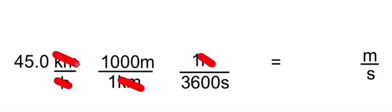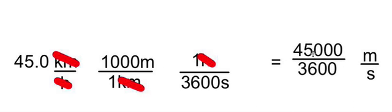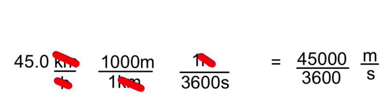across the top, I've got 45 times 1,000 meters. And on the bottom, I only have 3,600 seconds. So I will have units of meters per second. And when I do the math, I end up getting 45,000 divided by 3,600. So you punch that into your calculator, reduce it to lowest terms, and there is your converted speed.